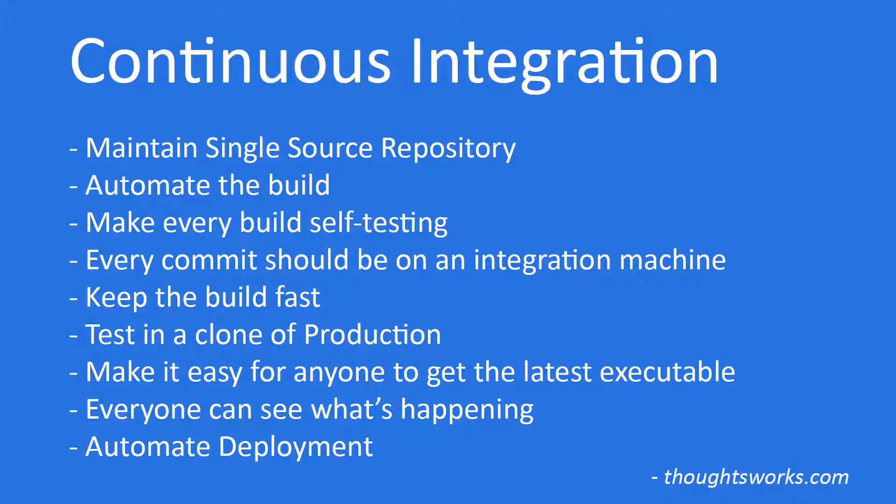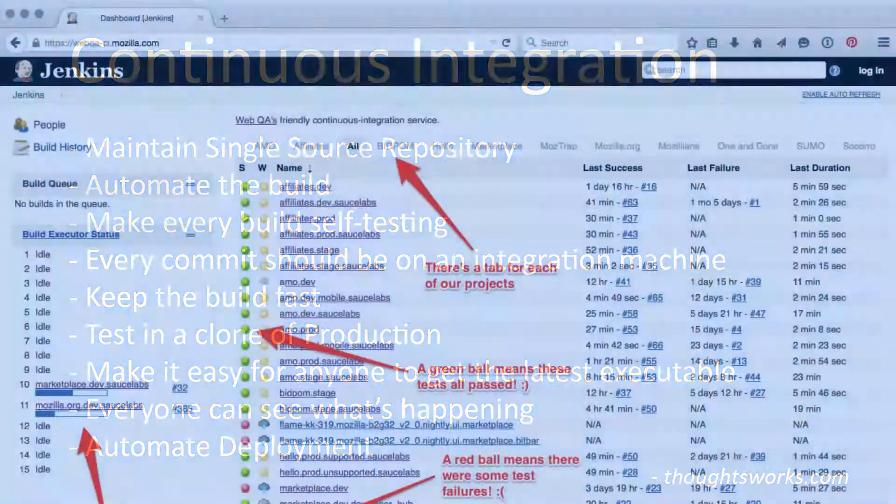Secondly, each time an architect adds something new, they'll also need to write up a test to verify that what they added is still okay. That way, any future changes that break the design will be noticed immediately. In order for any new blueprints to be approved, they'll first have to pass all of our testing.